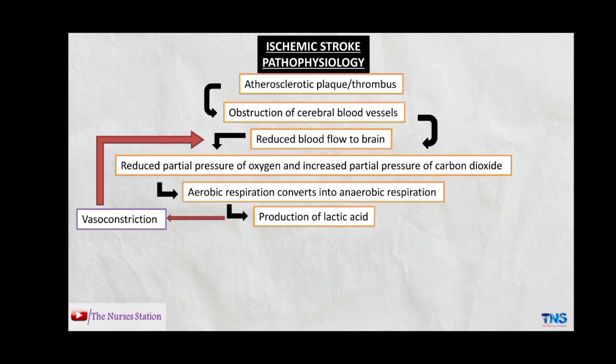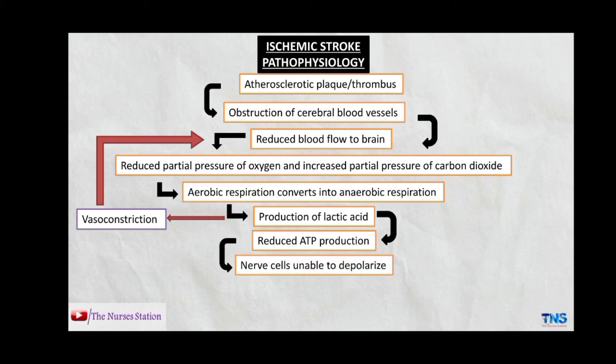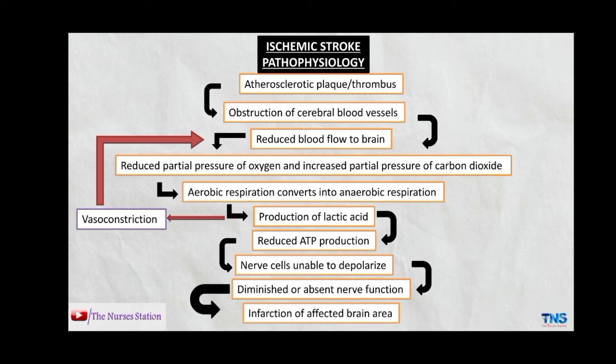Anaerobic respiration also results in reduced ATP production. ATP is very important for nerve function, and when ATP production is reduced, nerve cells will not be able to depolarize or maintain their function properly. This results in diminished or absent nerve function, which ultimately leads to infarction of the affected brain area — that is, the death of the affected brain tissue.